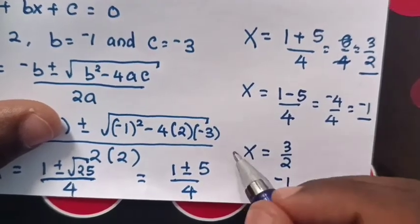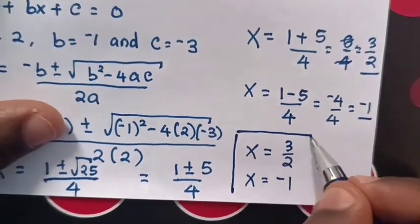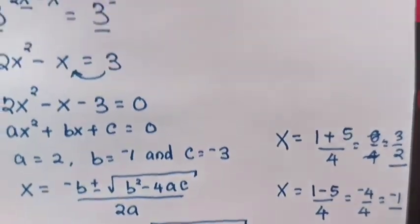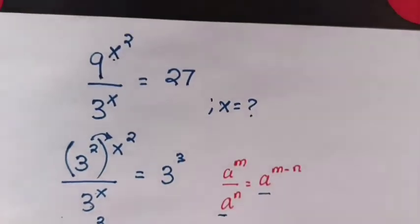Therefore, the value of x is 3 over 2 and x equals negative 1. So these are the answers. Don't forget to subscribe to my channel. See you next, bye bye.